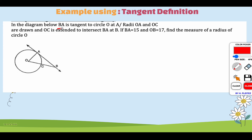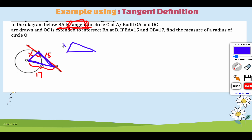In the diagram, BA is tangent to circle O. It's important to highlight and annotate because when we learn about different segments, you have to know what is what. Radii OA and OC are drawn, and OC is extended to intersect BA at B. If BA is 15 and OB — which is this whole segment — is 17, we want to find the measure of the radius, OA. Since BA is tangent to our circle and we already have a radius drawn, I'm going to draw our right angle in there because we're likely going to use that fact.